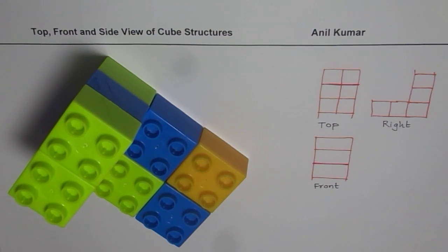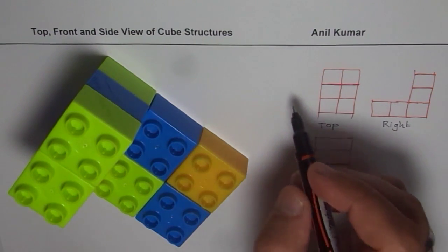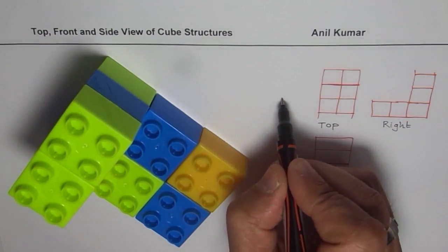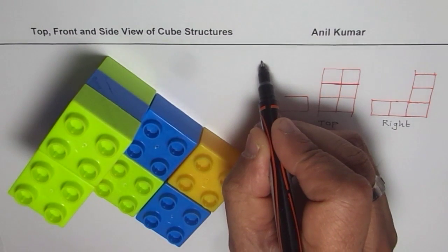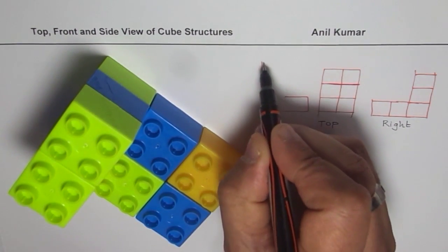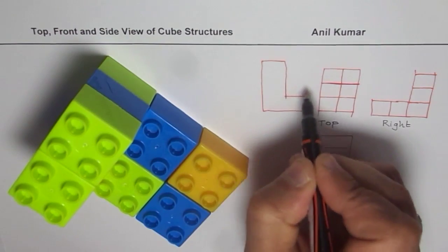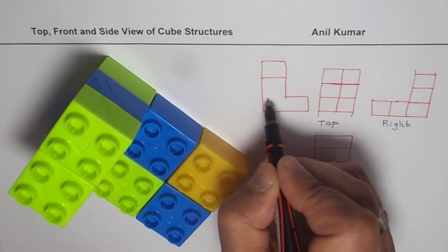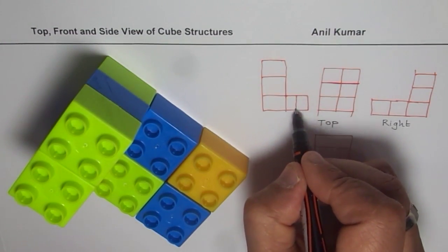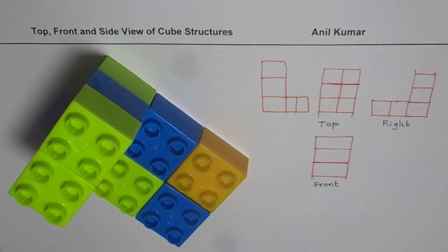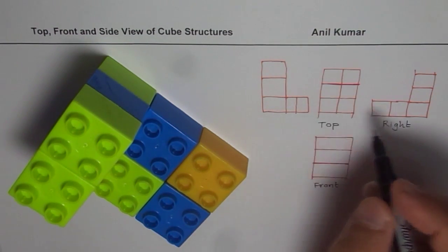If you look from the left side, it looks exactly the same as the right side — also an L-shape. Draw it on graph paper and you'll get excellent results. The idea is to understand how to draw these views.